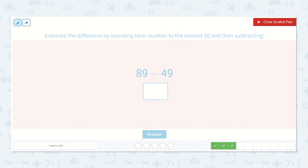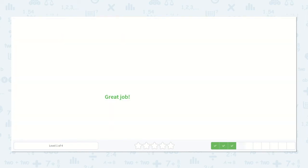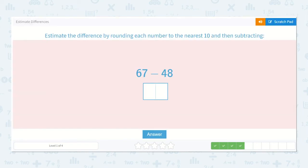Here we have 89, which is closer to 90, minus 49, which is closer to 50. 90 minus 50 is 40. 67 minus 48: 67 rounds up to 70, and 48 rounds up to 50, so 70 minus 50 is 20.